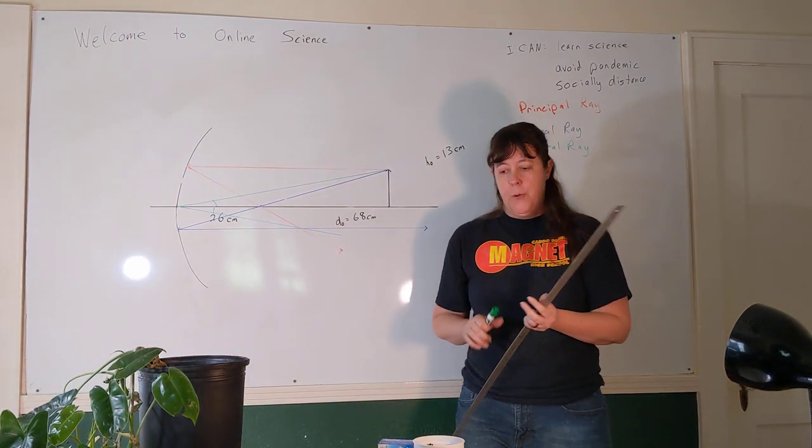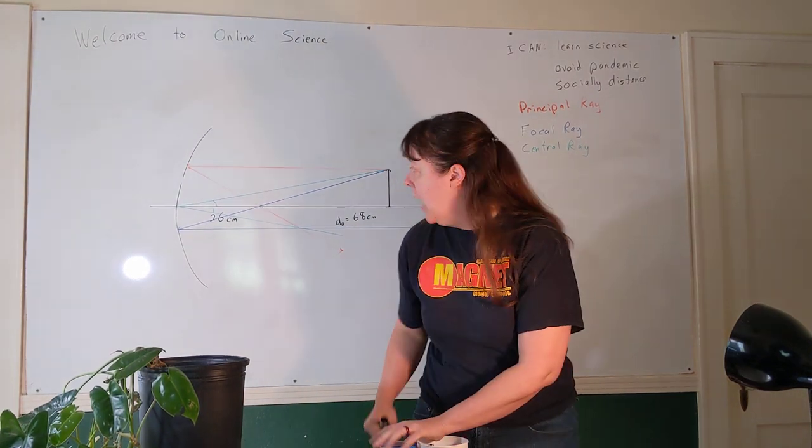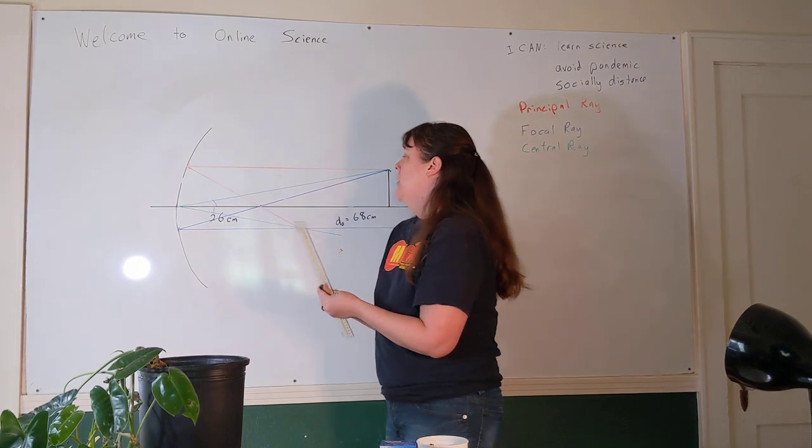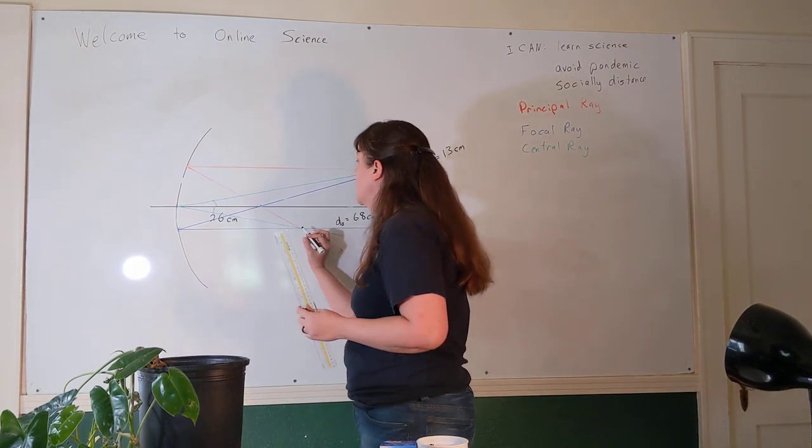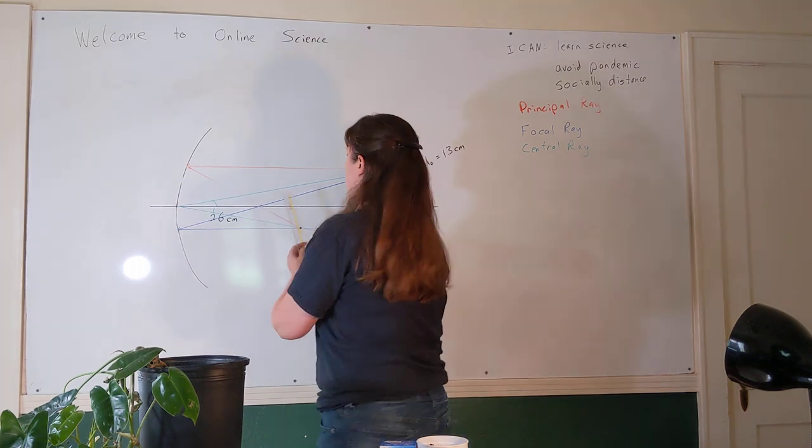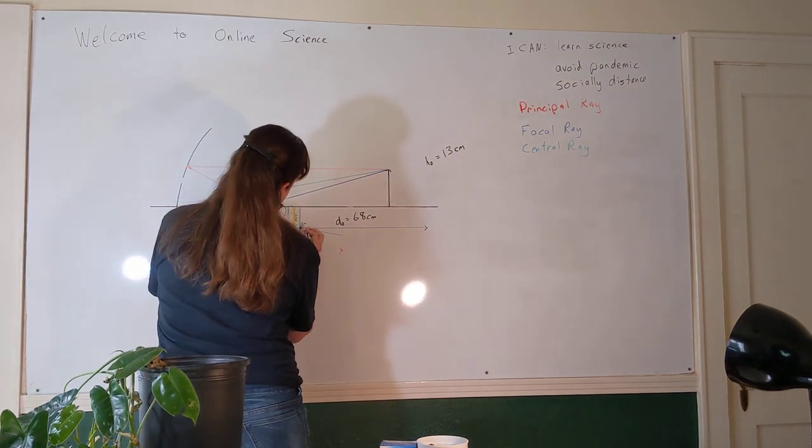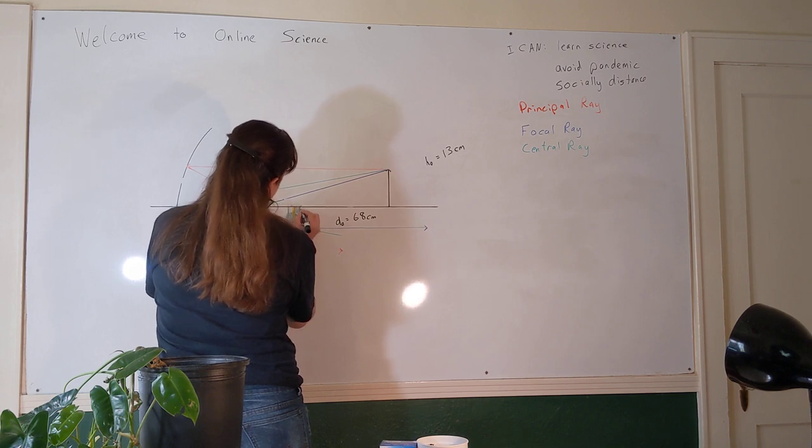So we have our three light rays coming together to tell us where the top of our arrow is. The top of our arrow is below the principal axis. To draw in the whole object, we'll draw a line that goes from here up to the principal axis.